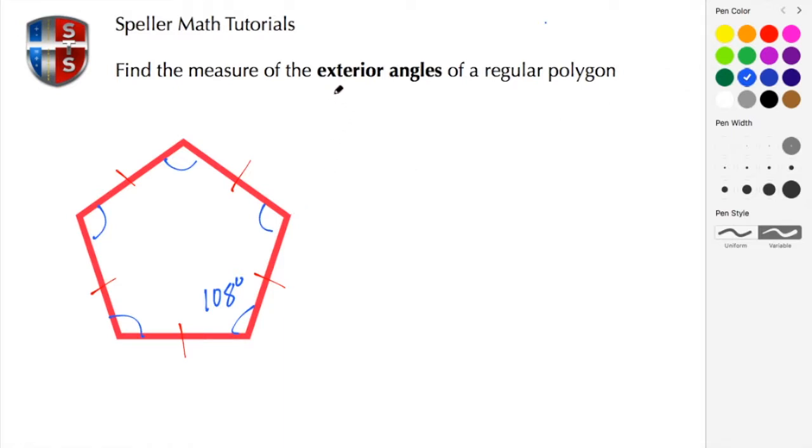And now since we're trying to find the exterior angles, I'm going to extend each one of these segments. Let's go and switch to red. So each one of these segments get extended so we can see where these exterior angles will be. So there's our third one, our fourth one here, and our fifth one.